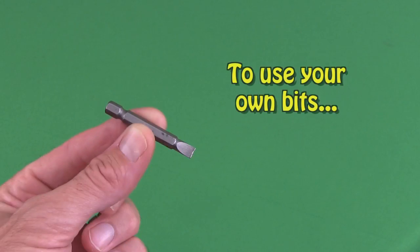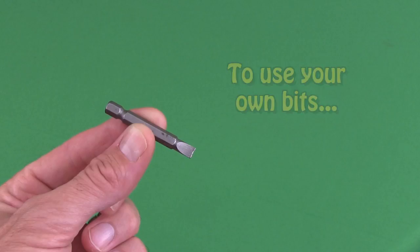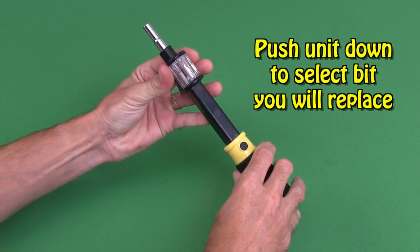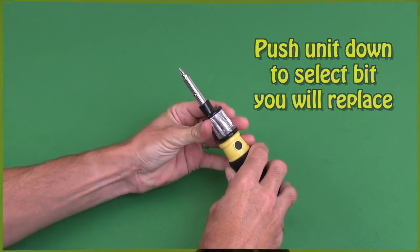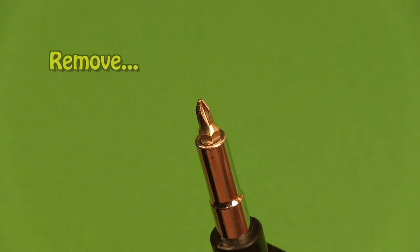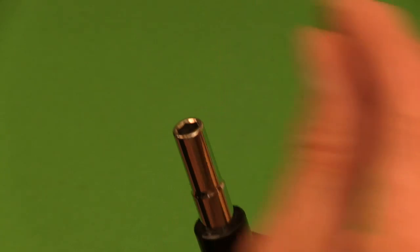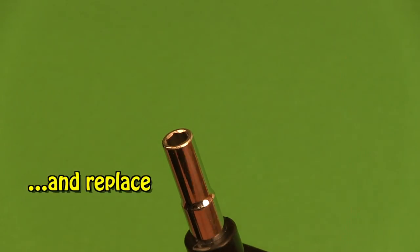To use one of your own bits with the Bit360 screwdriver, first push the unit down to select the bit you will be replacing. Then remove that bit from the end of your Bit360 and replace it with your existing bit.